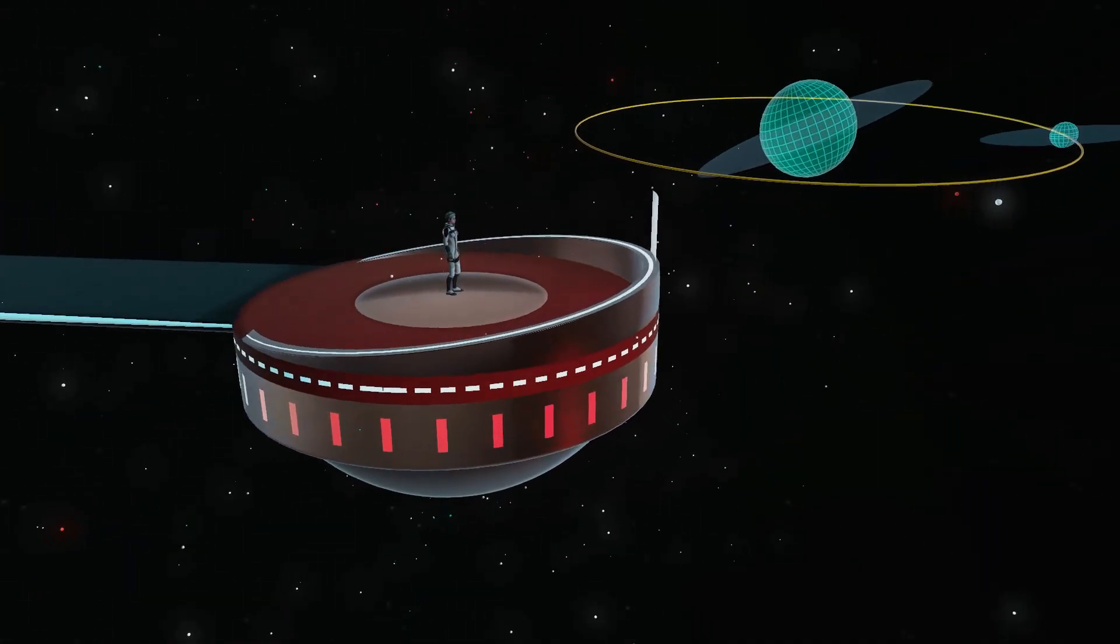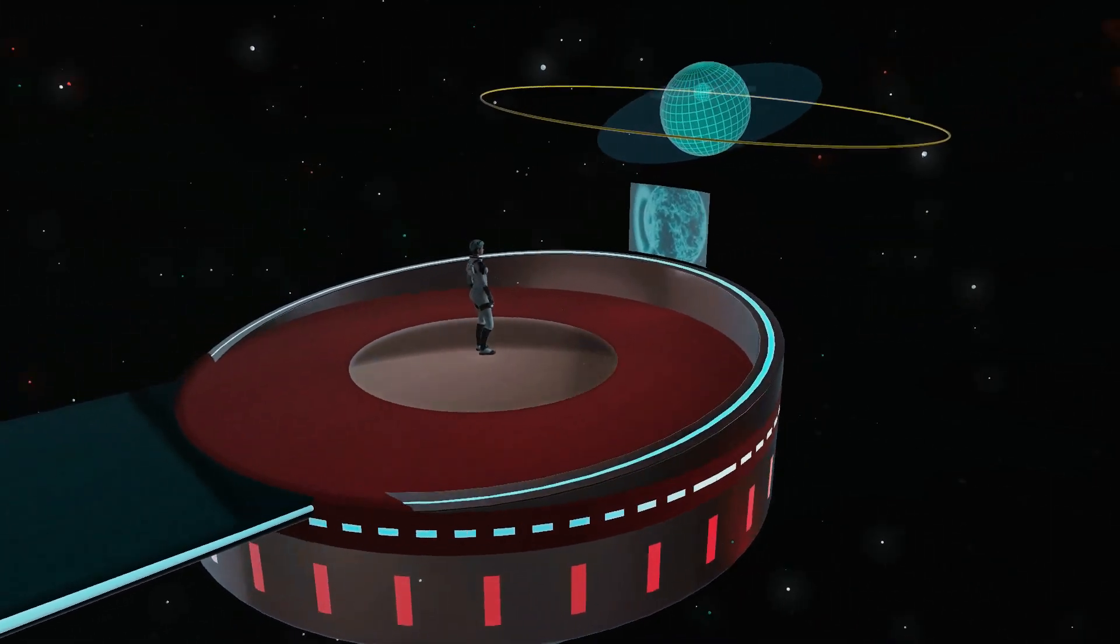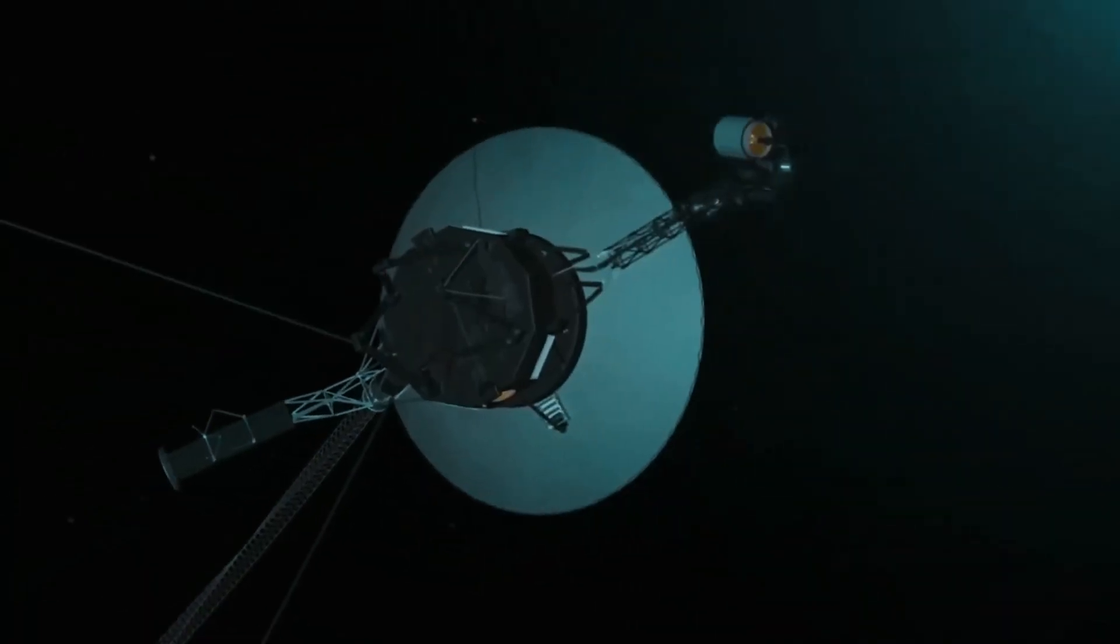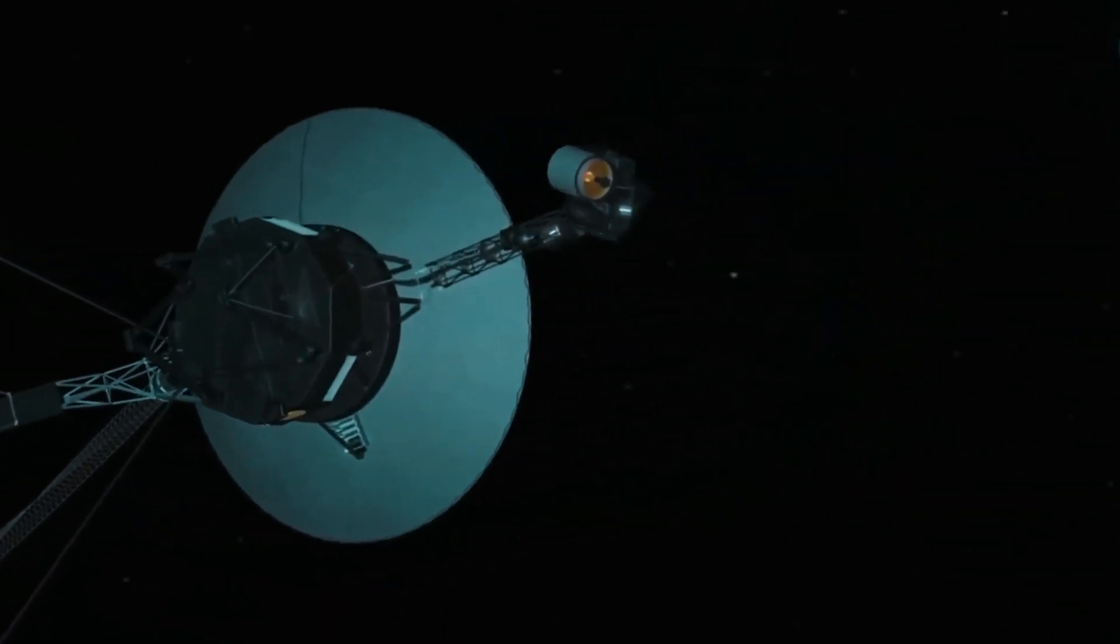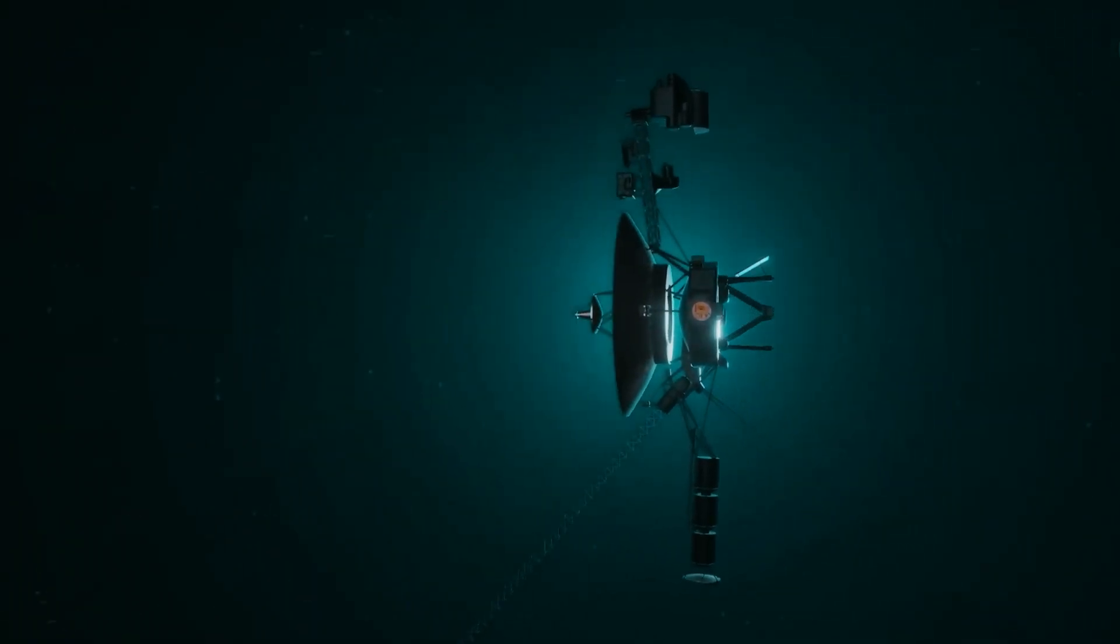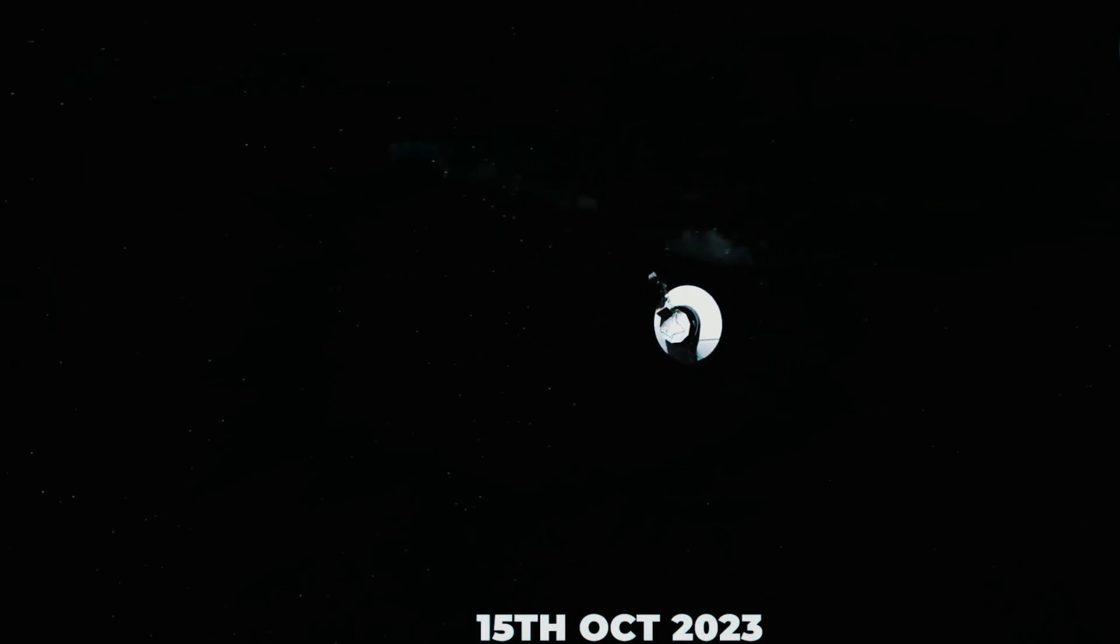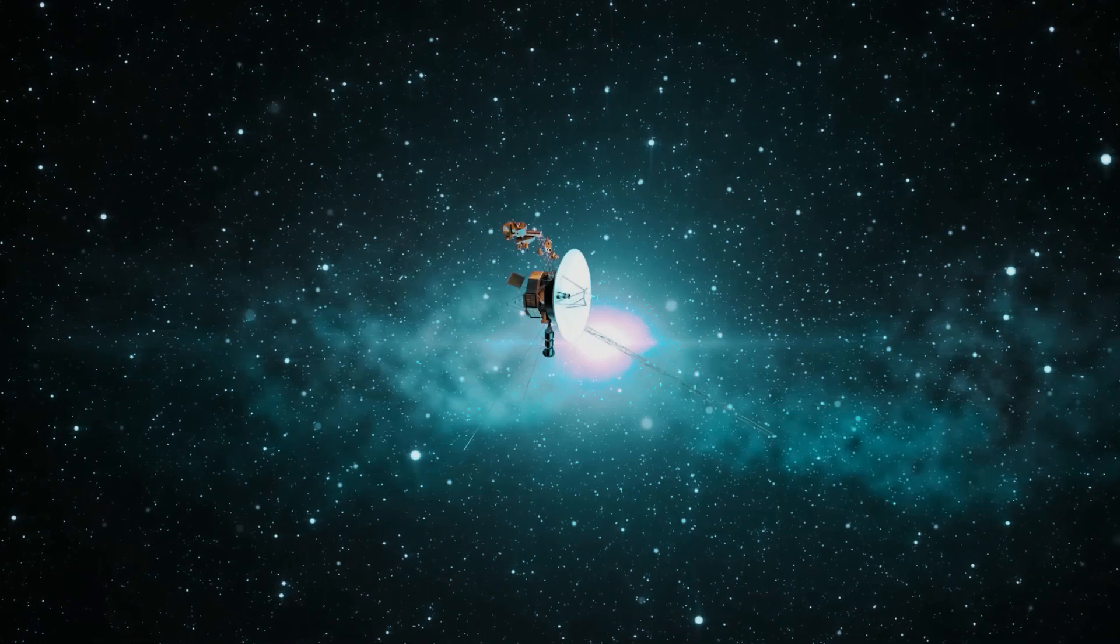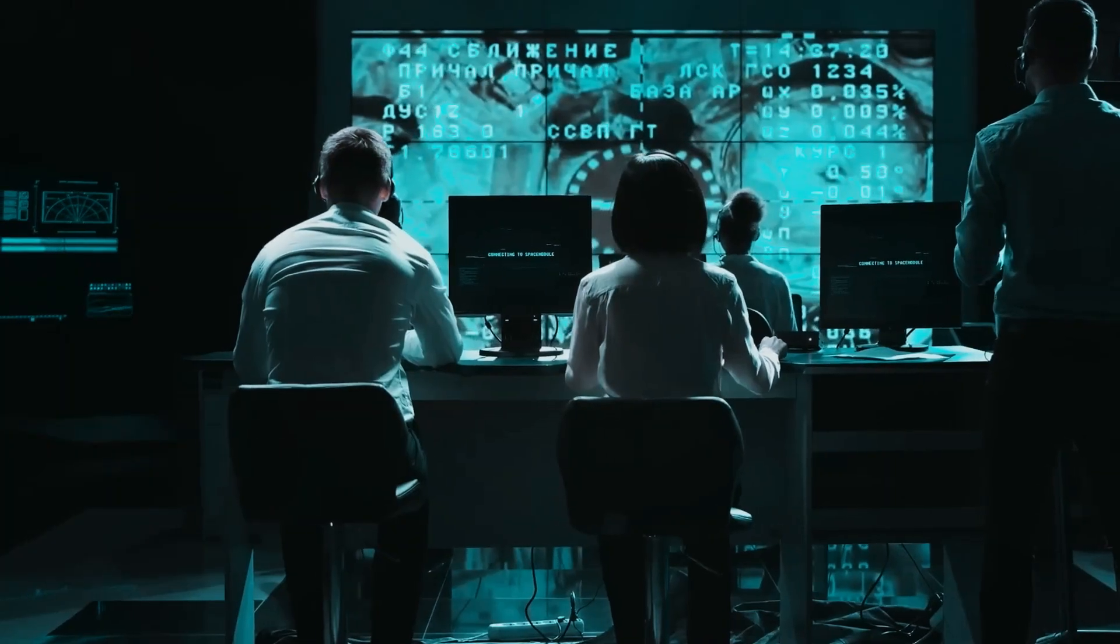Scientists explain that although our connection with Voyager 2 may have been lost, it will be restored very soon. This spacecraft adjusts its orientation from time to time over the course of a few months so that the data transmitted through it can reach the scientists accurately and safely.